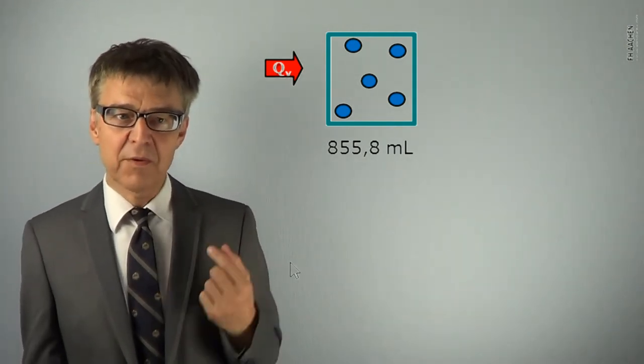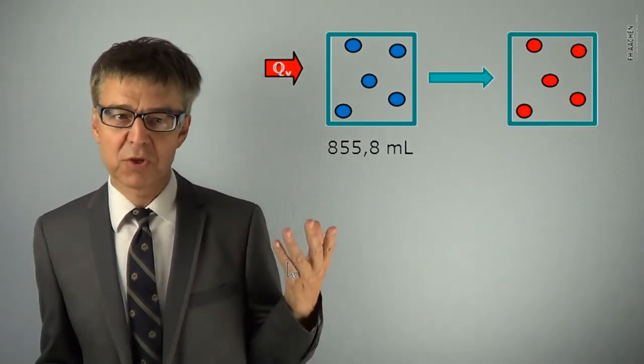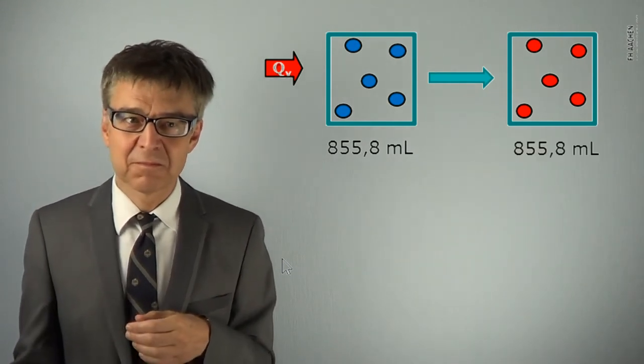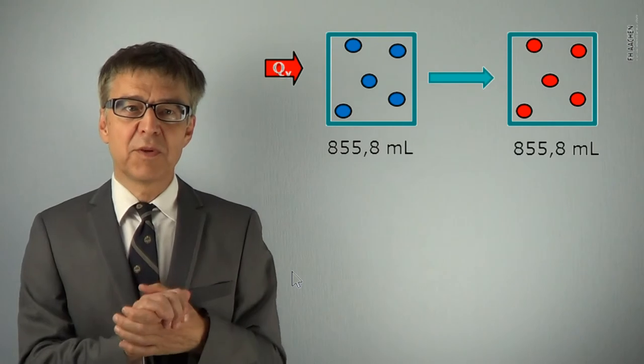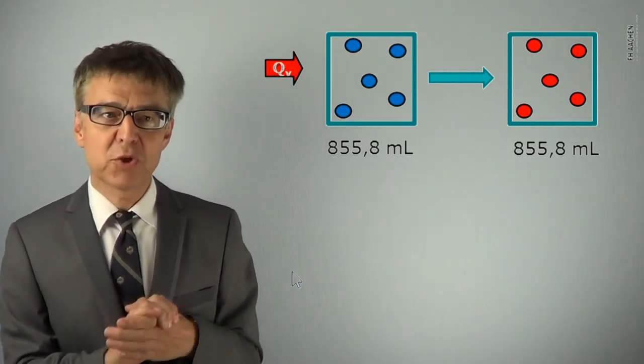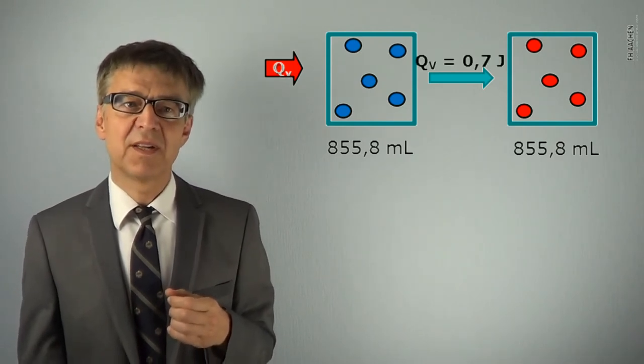With isochoric heating, the volume is being held constant. Imagine a closed tin can on a hot plate. To increase temperature by 1 K, 0.7 J of heat have to be isochorically added.